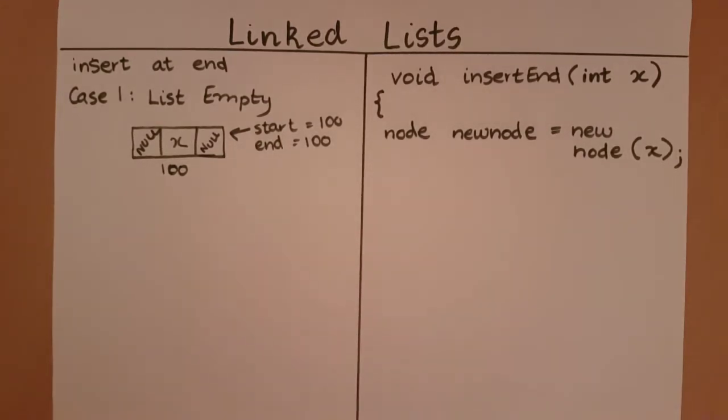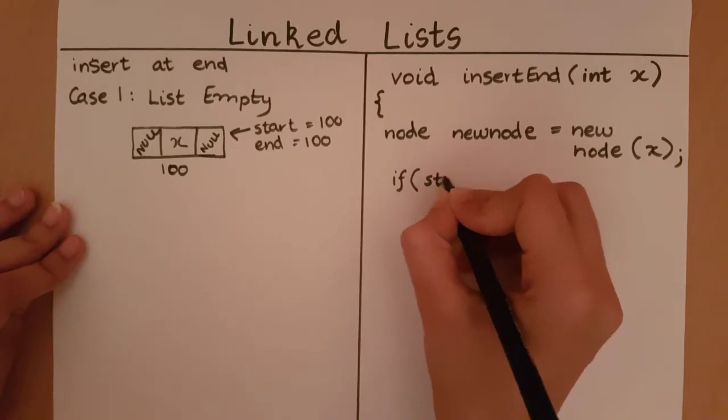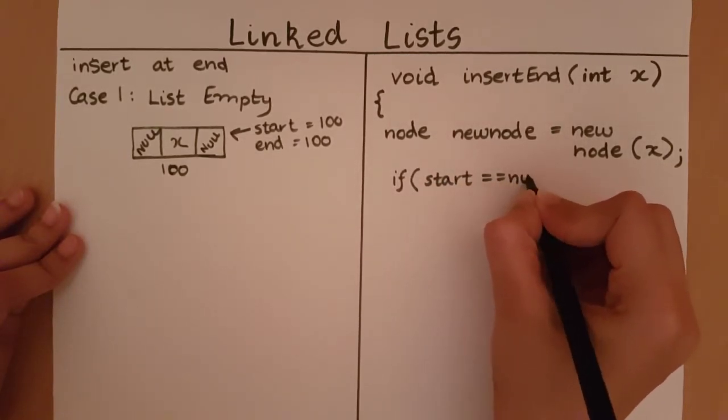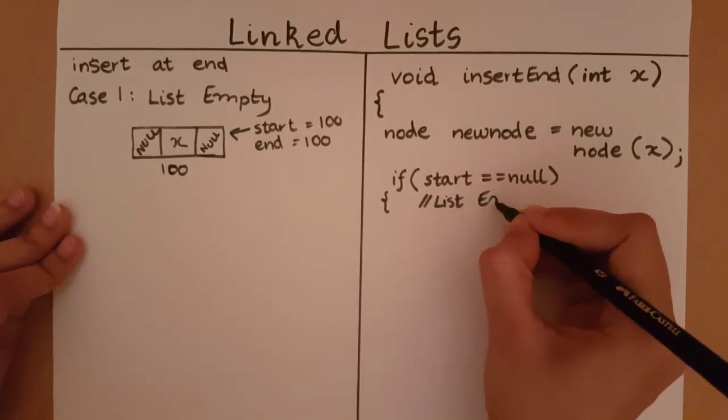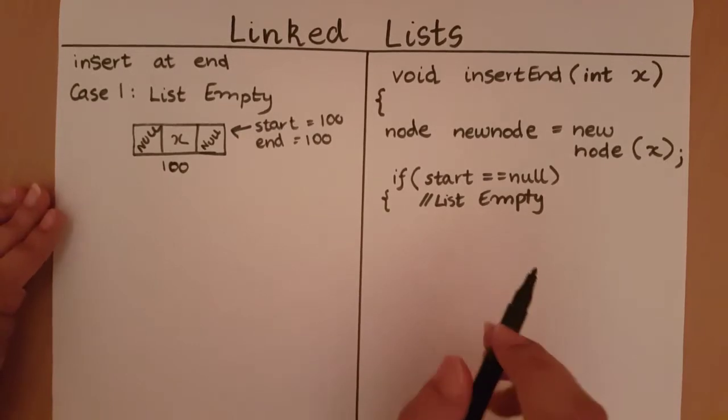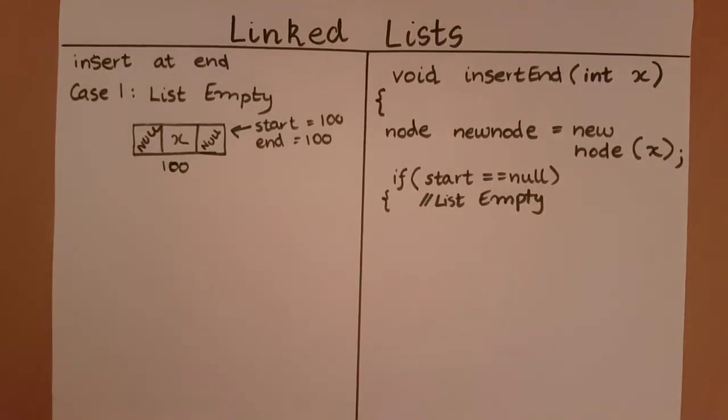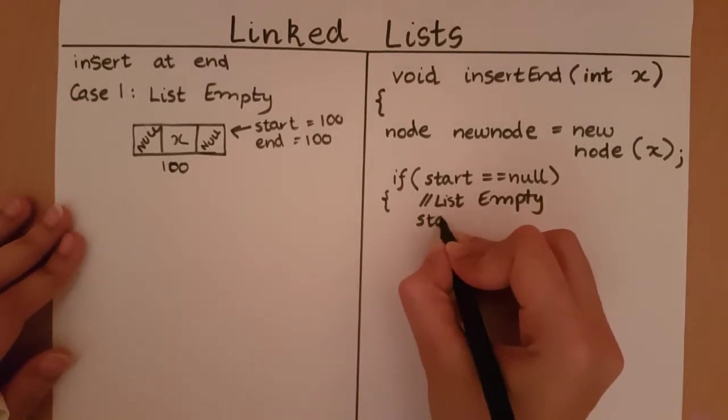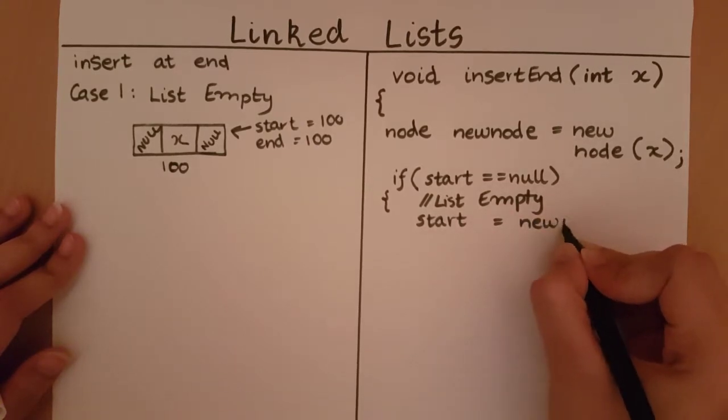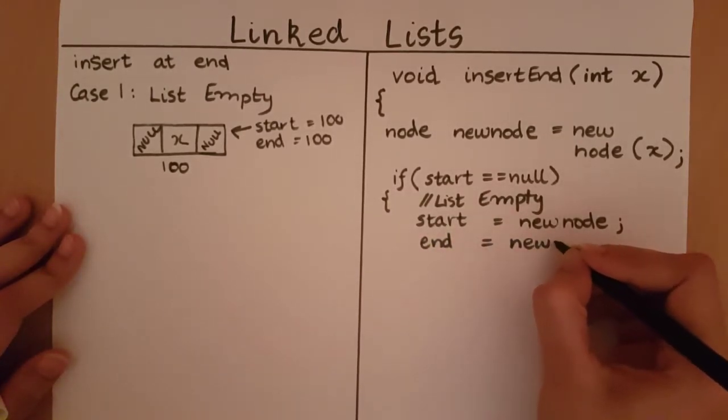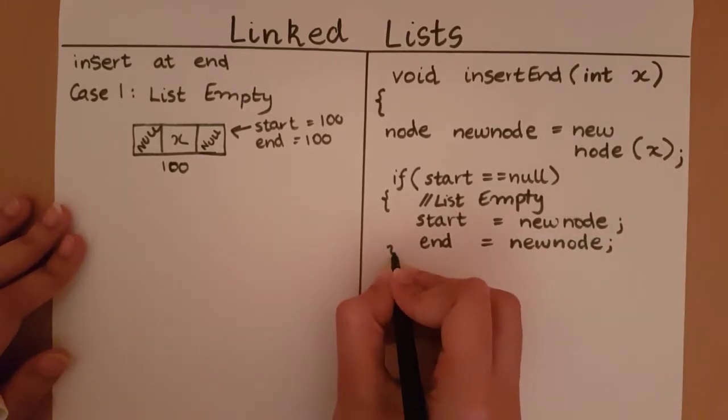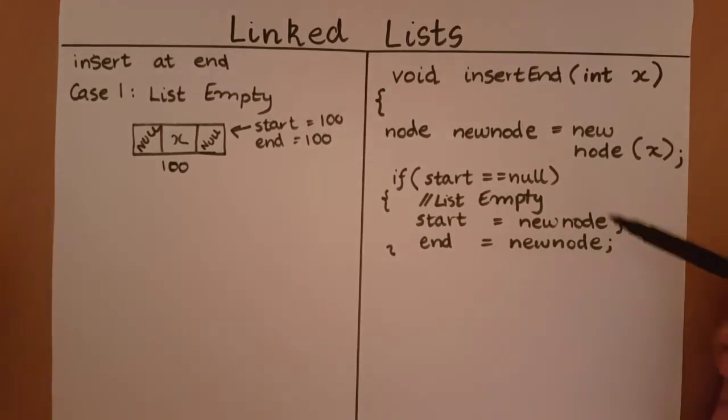So let's see how we are going to write that. If the list is empty, the condition for this will be if start is equal to null. This means the list is empty. In this case I must set start to the new node and set end to the new node. With this I have completed adding that first node into the linked list and I can return from my function.